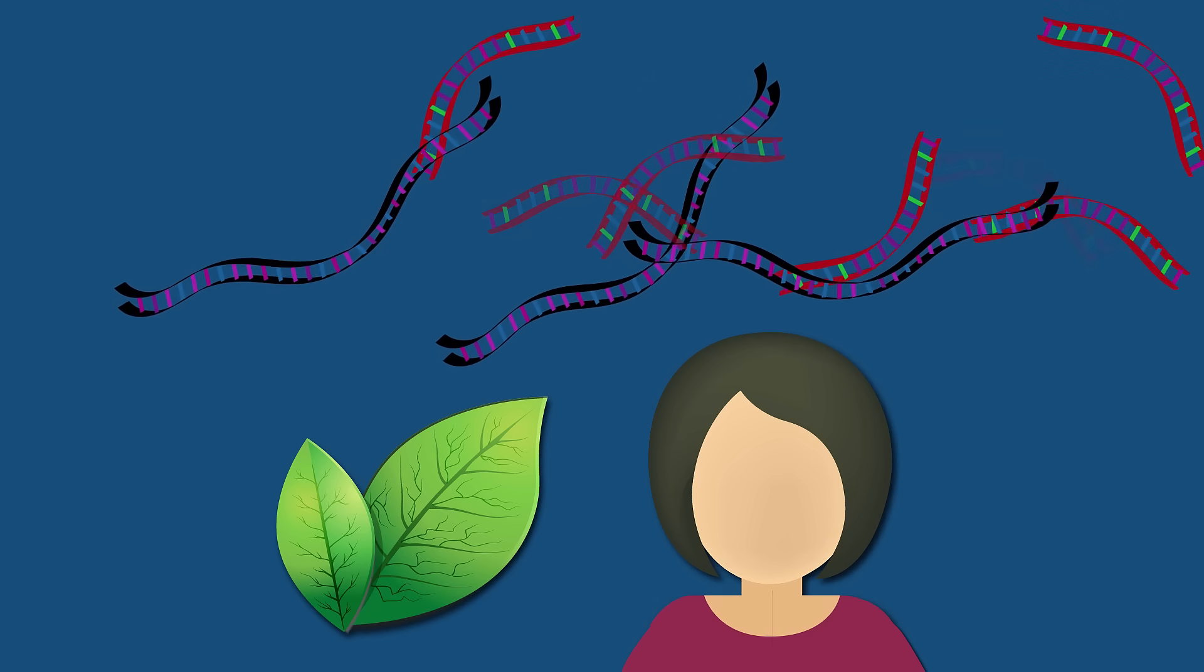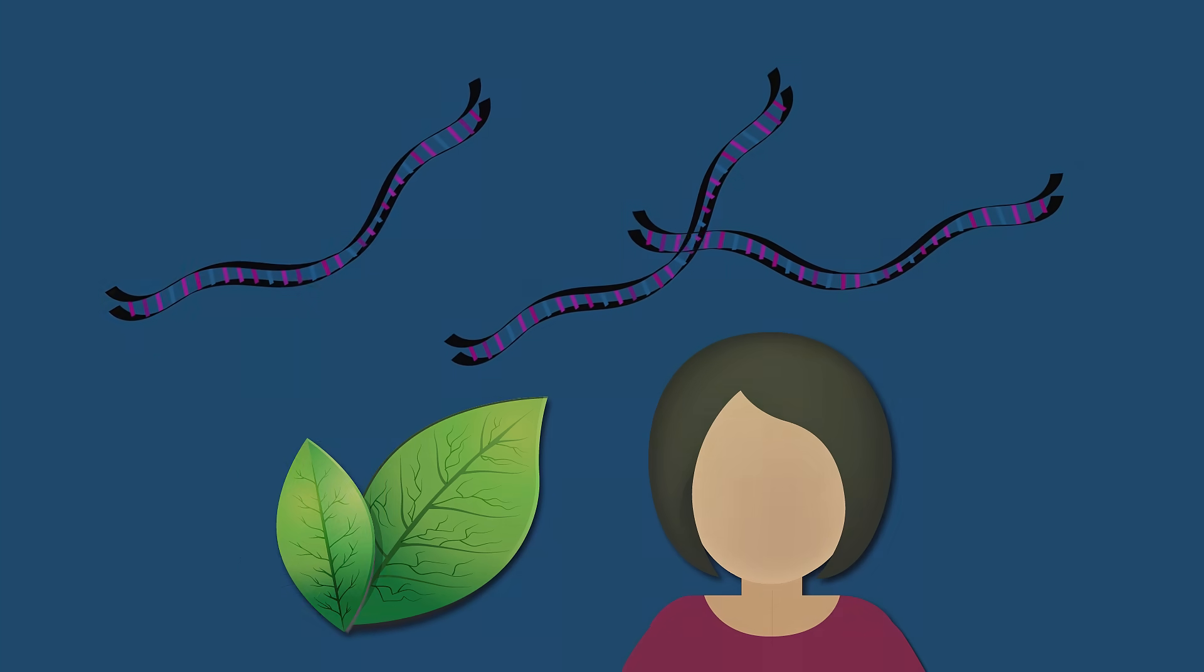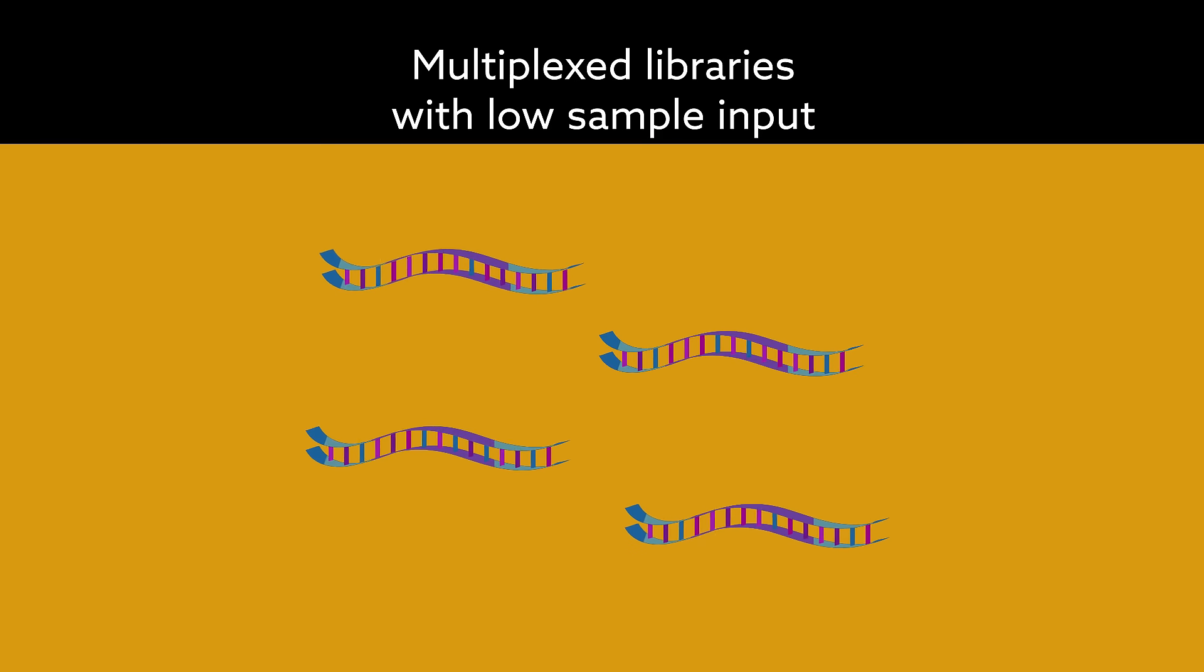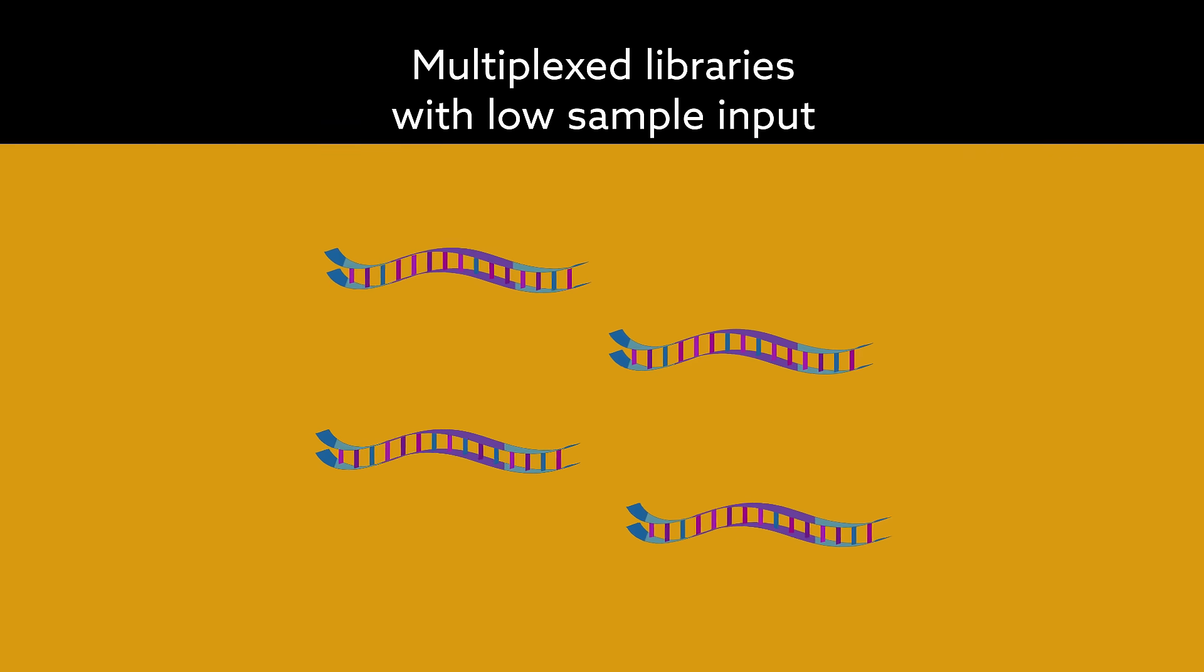And because you remove the unwanted sequences post-library prep, you can even use this method on multiplexed libraries, with low sample input, getting you to your sequencing data faster and easier than ever.